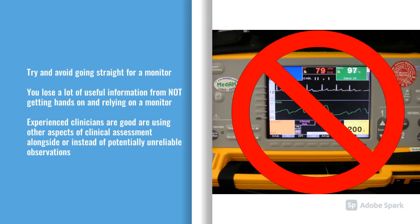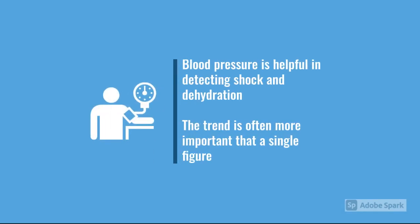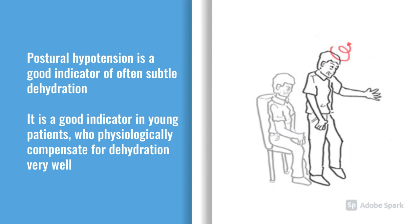An experienced nurse will say 'the blood pressure says this, but I don't believe it' — because they're getting information from other signs: the pulse looks okay, the patient looks alright. When talking about blood pressure, the trend is obviously important — is it going up or down — but also postural hypotension is a very sensitive indicator of hypovolaemia, particularly in young people. Young people are very good at maintaining their blood pressure until essentially the very end when it drops off, so if they've got postural hypotension, that's a good indicator of hypovolaemia.